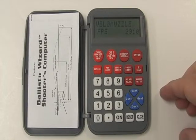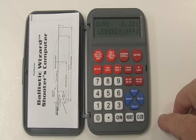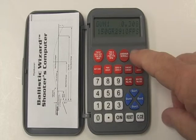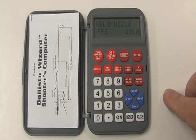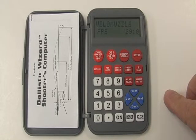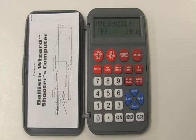Now we go to the inputs. Press a gun button, then press the enter button, and the first input will present itself in the display. By continuing to press the enter button, you will be able to cycle through all of the inputs. The first entry is velocity at the muzzle.